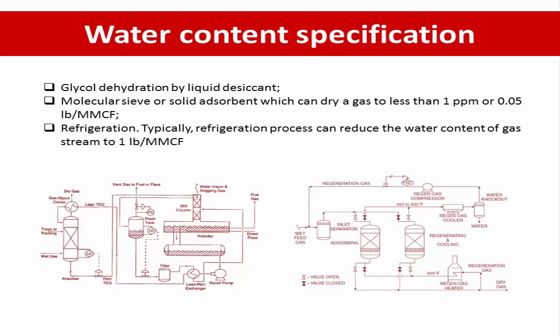Another option is to use a refrigeration system. Typically, the refrigeration process can reduce the water content of the gas stream to 1 ppm per MMSCF. The following shows a typical gas dehydration process. This covers the risks of hydrate and the ways to protect against gas hydrate formation in pipelines and process units.